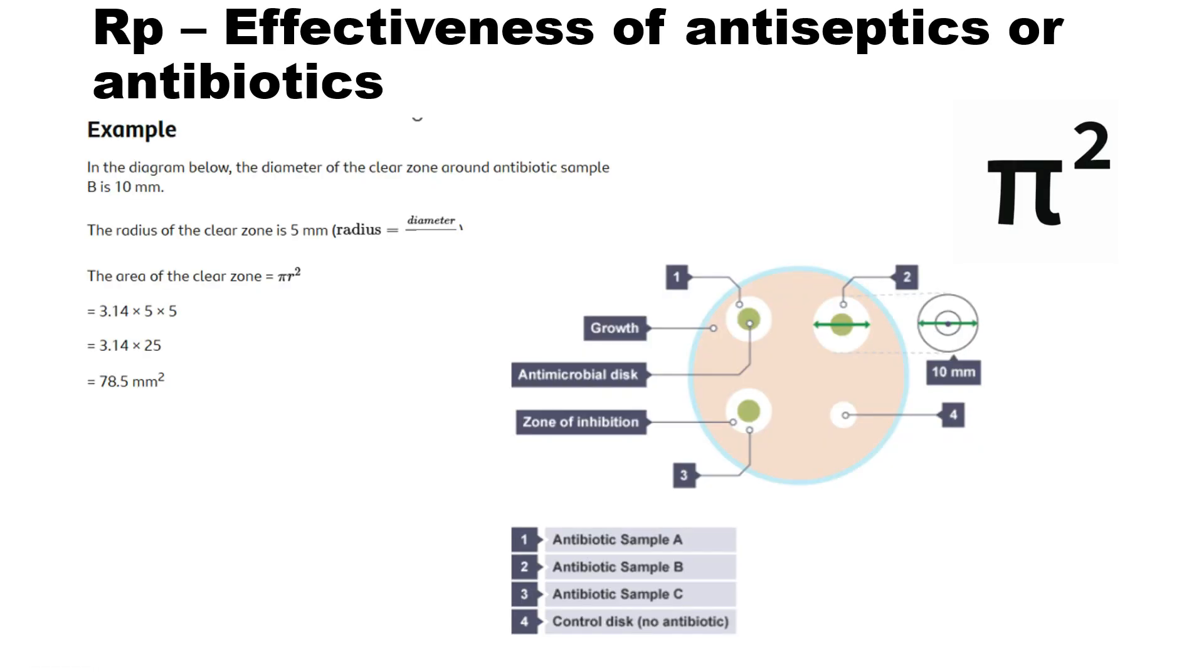Right. In the required practical for GCSE biology, you would need to know the effectiveness of antiseptics or antibiotics, and you need to know about inhibition zones. So inhibition zones are areas of clear areas where bacteria have been killed by, let's say, an antibiotic. And you might be asked to measure it. So you measure it using pi r squared to work out the area of the clear zone. So use your ruler, work out the diameter, and then half of that is the radius. So radius is diameter divided by two. So the area of the clear zone is pi r squared. So in the case that I've given you, it would be 3.14, which is pi, or you can just put pi in your calculator, times 5, times 5, which gives 78.5 millimeters squared.